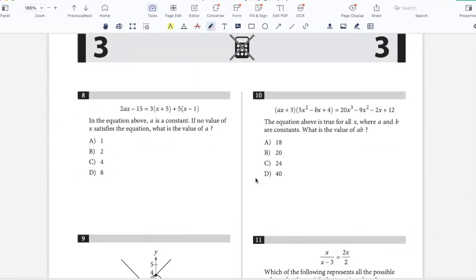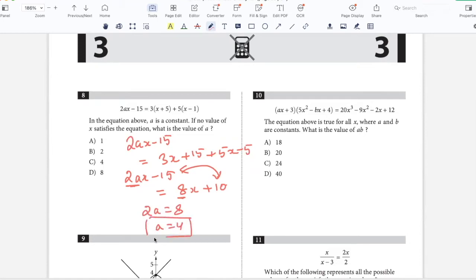In the equation above, A is a constant. If no value of X satisfies the equation, what is the value of A? 2AX minus 15 equals 3X plus 15 plus 5X minus 5. So 2AX minus 15 equals 8X plus 10. For the linear equation to have no solution, the coefficients of X should be equal and the constant term should not be equal. If we equate 2A to 8, which means if A is 4, then this equation will have no solution.